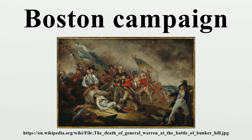The colonial army also had issues with supply and command. Its diverse militias needed to be organized, fed, clothed, and armed, and command needed to be coordinated, as each militia leader was responsible to his own province's Congress. Late in May, General Gage received by sea about 2,000 reinforcements and a trio of generals who would play a vital role in the war: William Howe, John Burgoyne, and Henry Clinton. They formulated a plan to break out of the city, which was finalized on June 12.